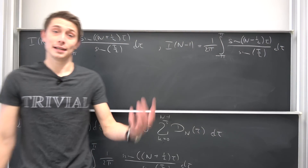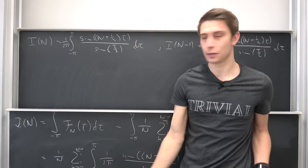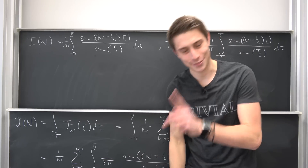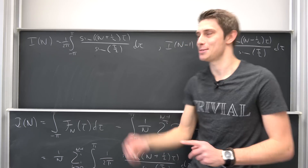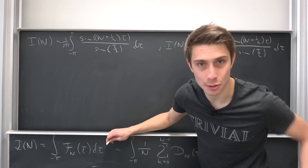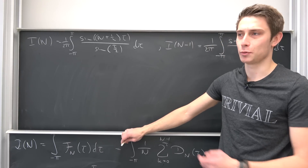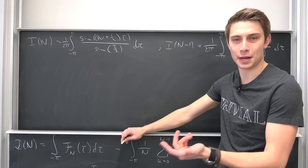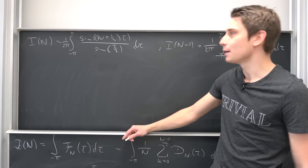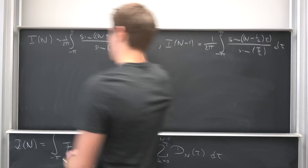He had used recursion to solve this, and that's pretty fucking dope. He had just done proof by induction backwards — backwards induction. Why not take the difference of those two integrals and see what we get?